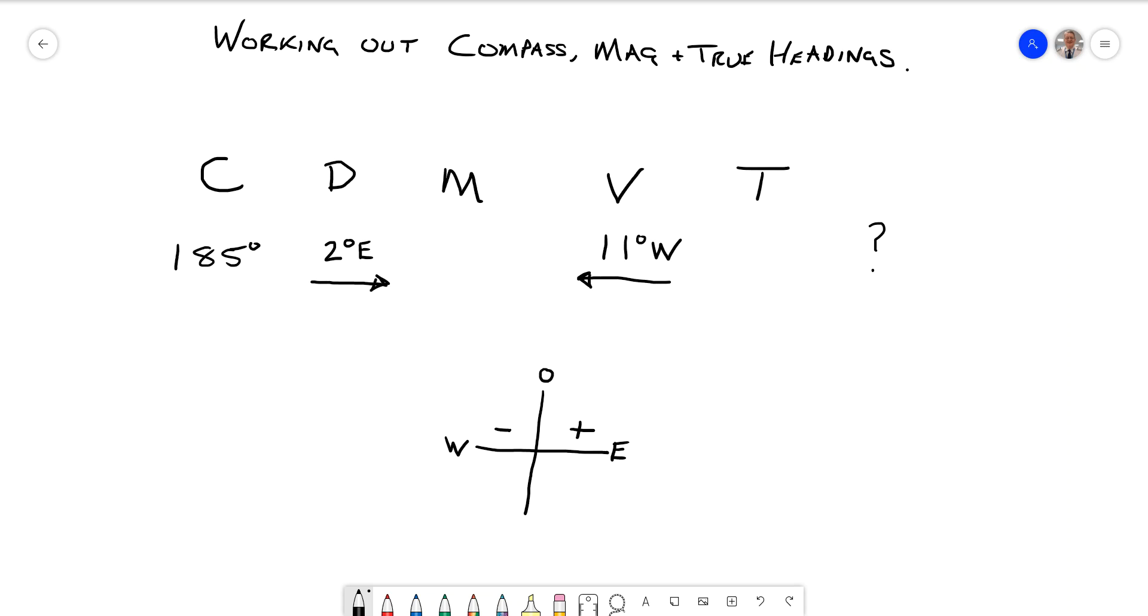Don't forget that the arrow will always point to the bigger number, so if I'm going from 185 to magnetic from compass, then my 2 degrees east figure means that my 185 is now going to become 187 magnetic.